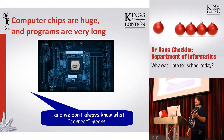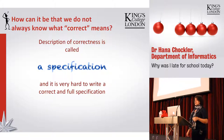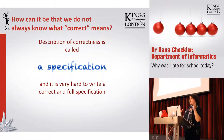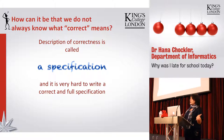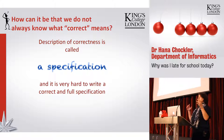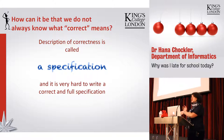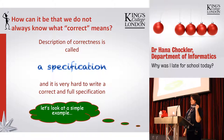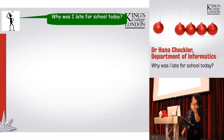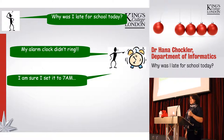You might say, 'Come on, what do you mean you don't always know what correct means?' A description of correctness of a system is called a specification. In order to check whether our system is correct, the specification should be exactly what you want to check — it should be correct and complete. Let's look at a very simple example: why was I late for school today? My alarm clock didn't ring. Why didn't it ring? I'm sure I set it to 7am.